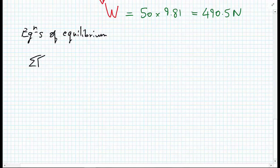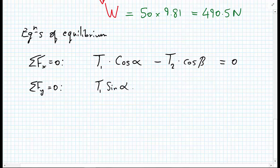So taking the sum of the forces in the x direction must be equal to zero, we have T1 multiplied by the cosine of alpha minus T2 multiplied by the cosine of beta must be equal to zero. And in the y direction, so sum of the forces in the y direction must be equal to zero, therefore T1 sine of alpha plus T2 sine of beta minus the weight must be equal to zero.